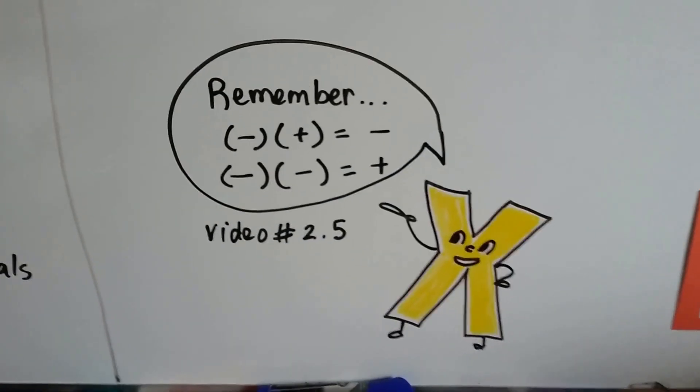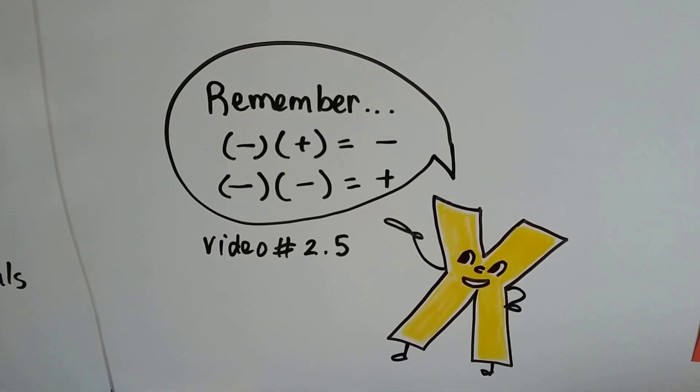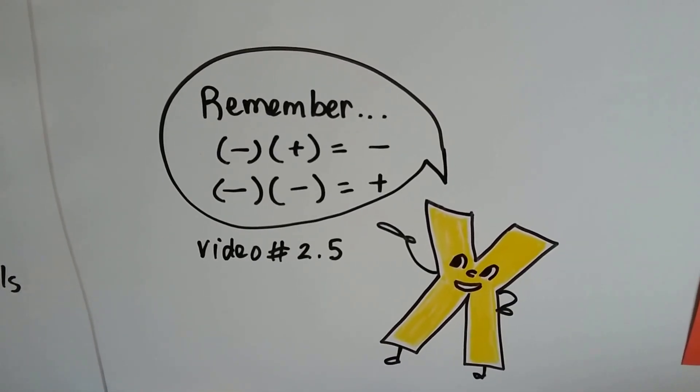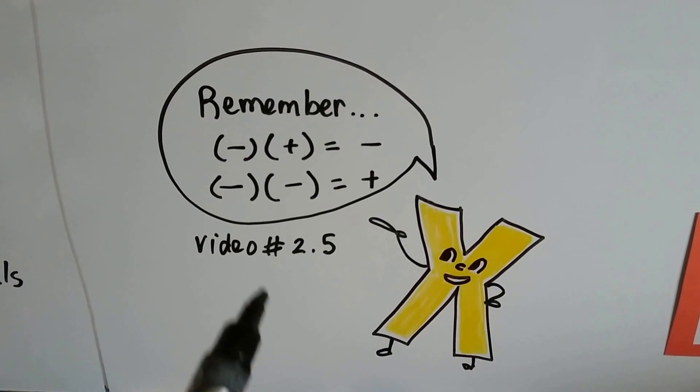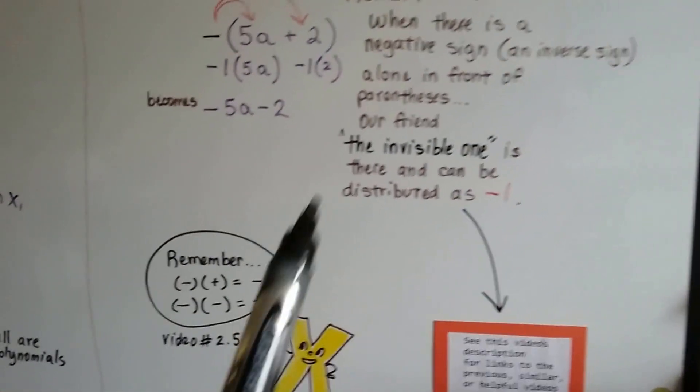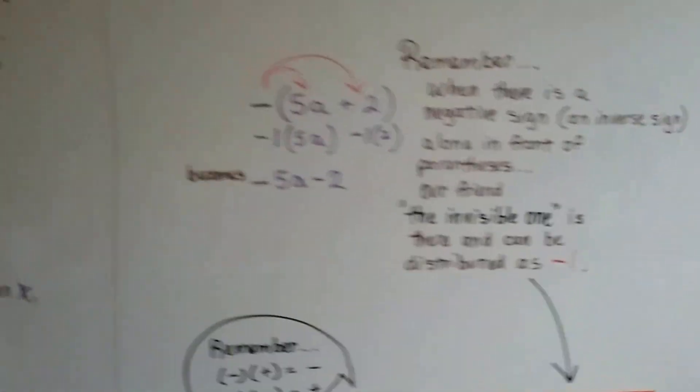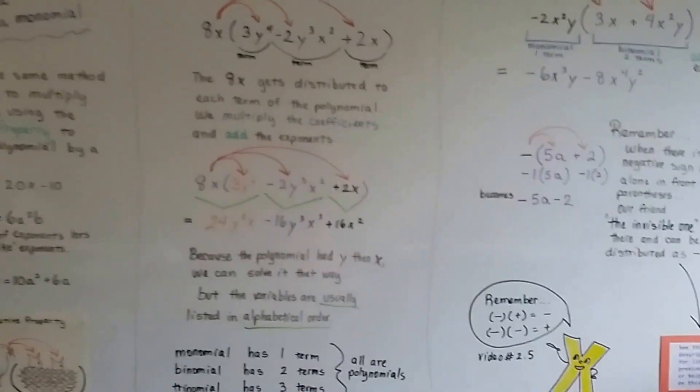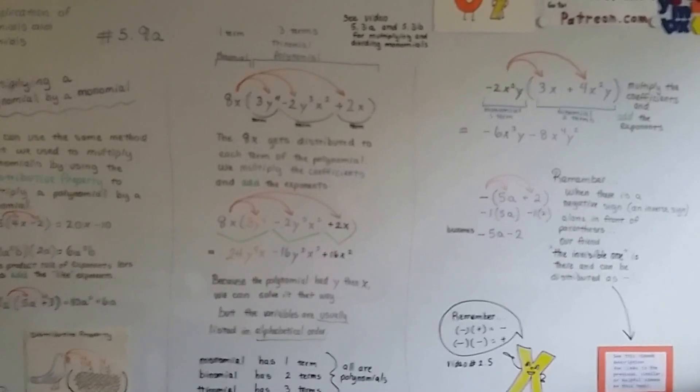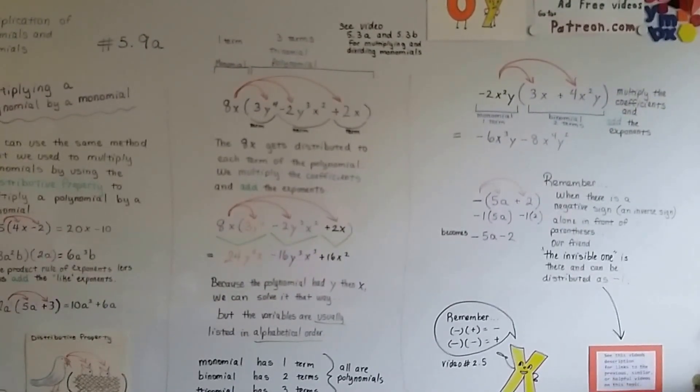And remember, when you're multiplying a negative and a positive, it doesn't matter what order they're in, it's going to give you a negative. And when you multiply a negative and a negative, it's going to give you a positive. And there'll be a link to video 2.5 in the description about that too, if you're confused. So there'll be a link about our buddy the invisible one in the description. So in our next video, 5.9b, we're going to talk about multiplying a binomial to a binomial. And I'll show you how to do that one. I'll see you there. Bye.